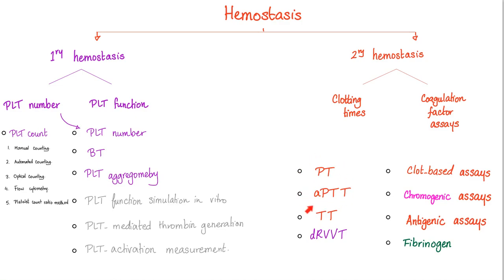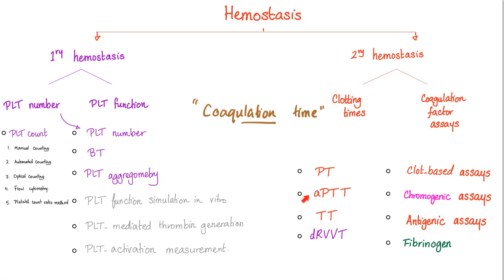We've covered PT, PTT, TT, and the DRVVT. There was an old archaic test called coagulation time, used before PT and PTT were discovered. It combined everything into one test that could only tell you there was a problem in the coagulation cascade — nothing more specific. Now we're more sophisticated: we can identify whether the problem is in the extrinsic pathway and common, the intrinsic pathway and common, or just the final step.